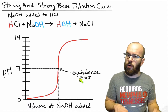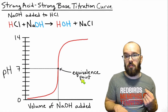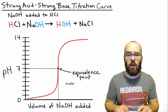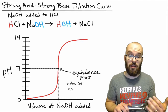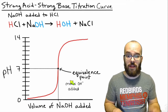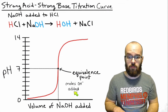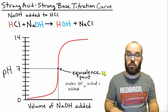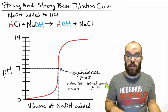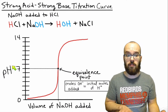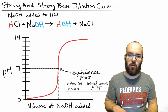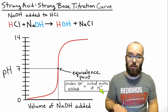The equivalence point is a special point where the amount of base added is equivalent to the amount of acid that we started with. The moles of hydroxide added from our strong base is going to be equal to the initial number of moles of hydrogen ions that we started with, which comes from our hydrochloric acid concentration. So the moles of hydroxide is going to be equal to the initial moles of hydrogen ions that were added.